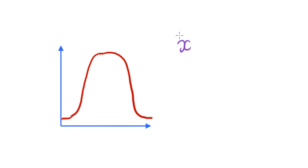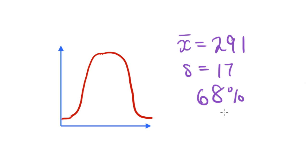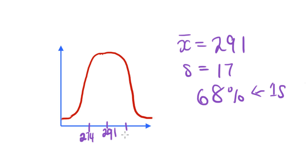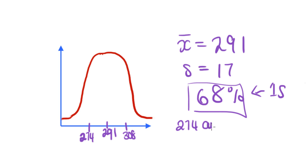Let's do one more. Say you have a mean of 291 and a standard deviation of 17. Between what interval does 68% of the data lie? This corresponds to one standard deviation either side, so we just do 291 minus 17 equals 274 and 291 plus 17 equals 308. So 68% of the data lies between 274 and 308. And that's the basic way this rule operates. In part two of the video I'm going to go over the corresponding percentages and how that works, so stay tuned.